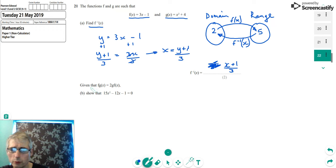So we've then got this second problem, which is given that f of g of x equals 2 g f of x, show this quadratic equation.